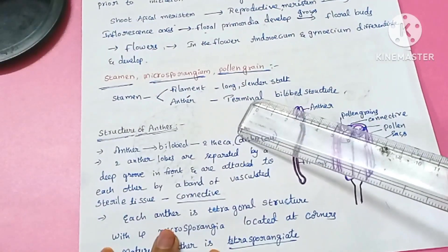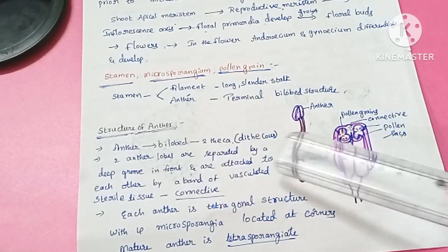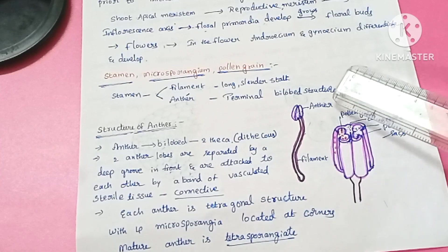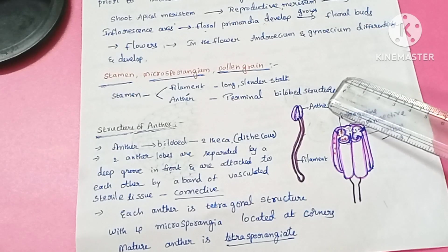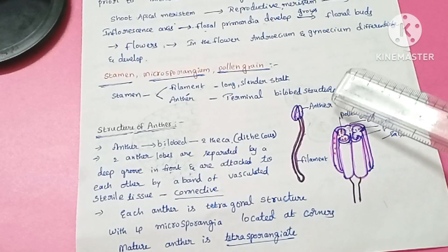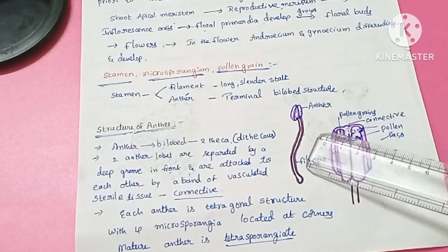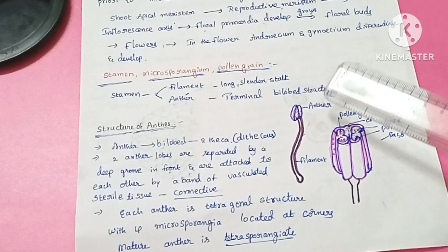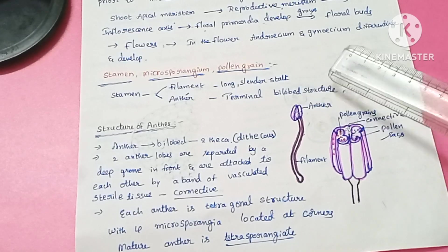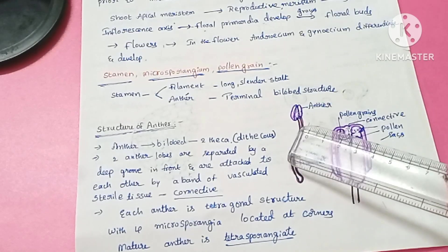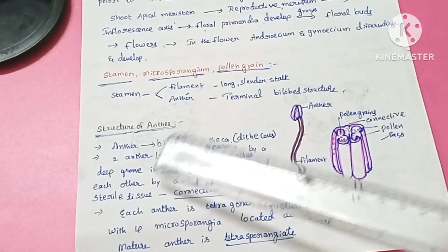Now we will see about stamen, microsporangia, and pollen grains. The stamen is the male reproductive organ. It consists of a filament, which is a long slender stalk-like structure, and an anther, which is a terminal bilobed structure.